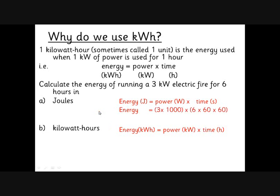Let's look at what that does to the numbers. The power in watts: this is 3 kilowatts, so that's 3000 watts - 3 times 1000. The time in seconds: 6 hours is 6 × 60 minutes × 60 seconds. You end up with 64,800,000 joules. That's just for running a fire for 6 hours. Imagine what your electricity bill would look like after three months of using an electric fire and all the other appliances in your home.